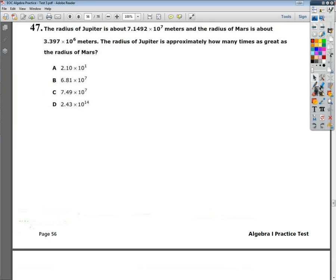The question says the radius of Jupiter is about 7.1492 times 10 to the 7th meters, and the radius of Mars is about 3.397 times 10 to the 6th meters. The radius of Jupiter is approximately how many times as great as the radius of Mars?